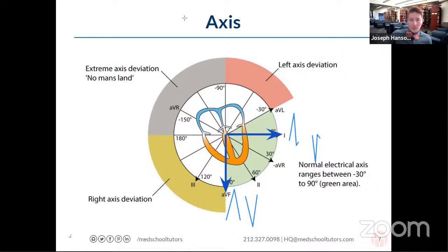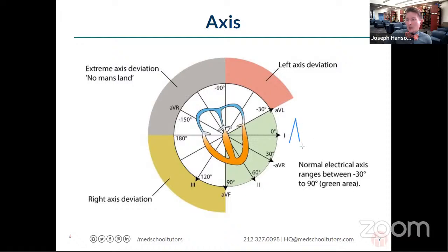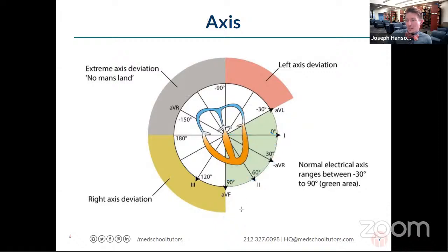What if the patient's EKG shows a negative deflection in lead AVF but a positive deflection in lead one? Would that be normal axis, right axis, or left axis deviation? Go ahead and type your answers into the chat box.